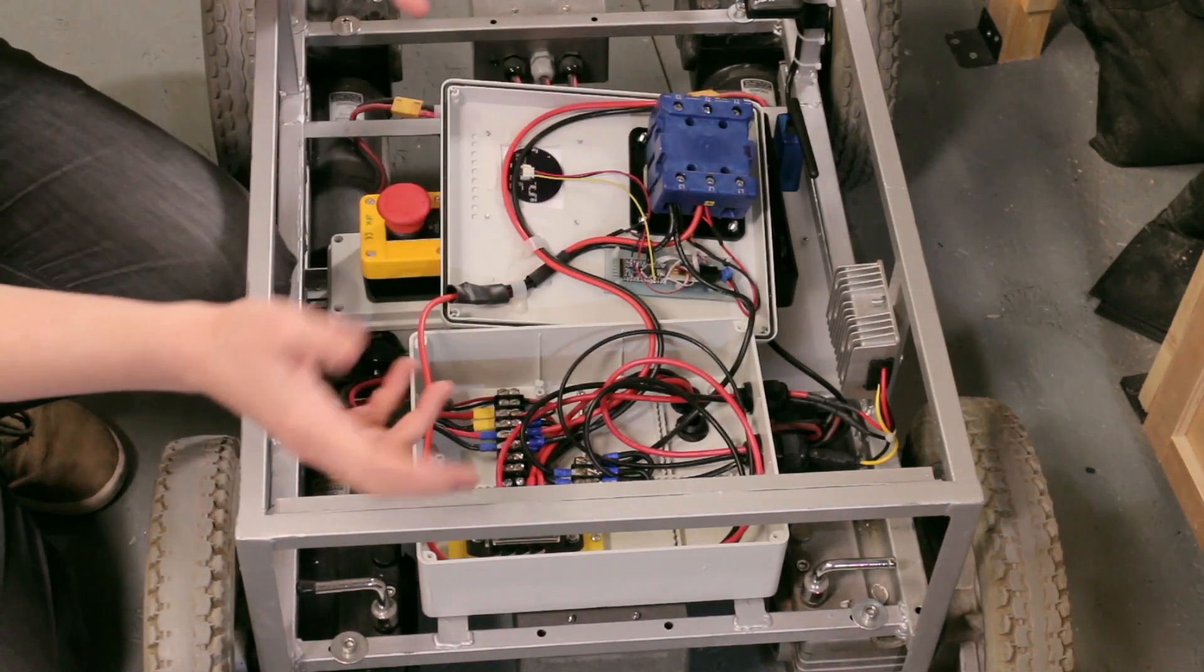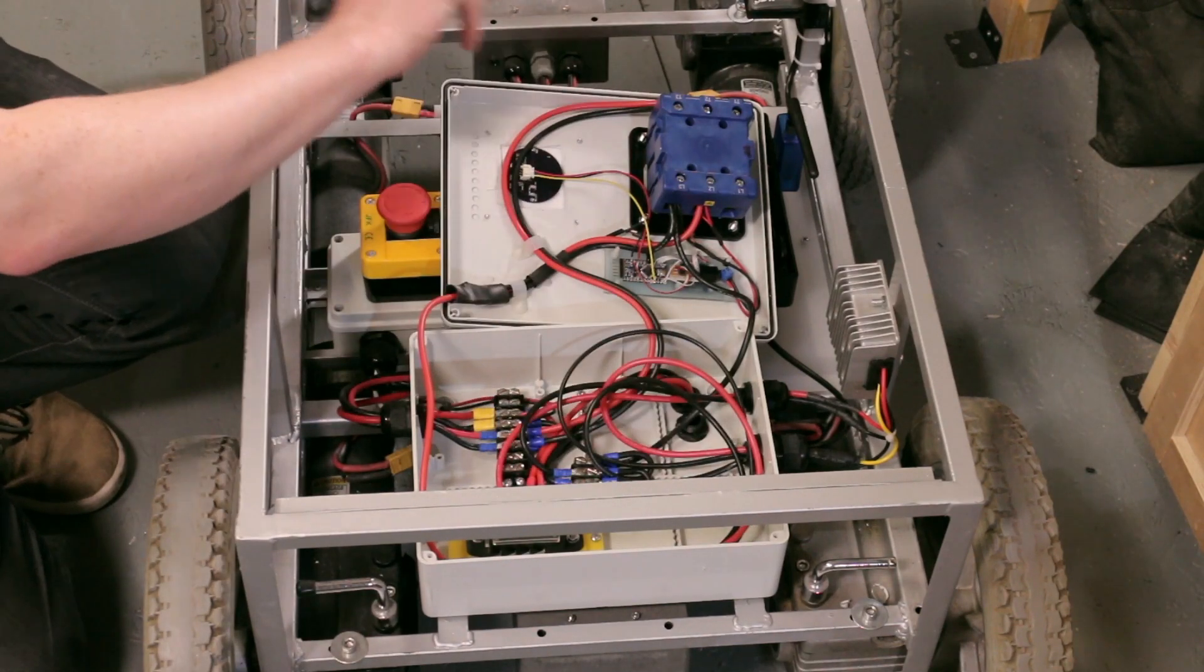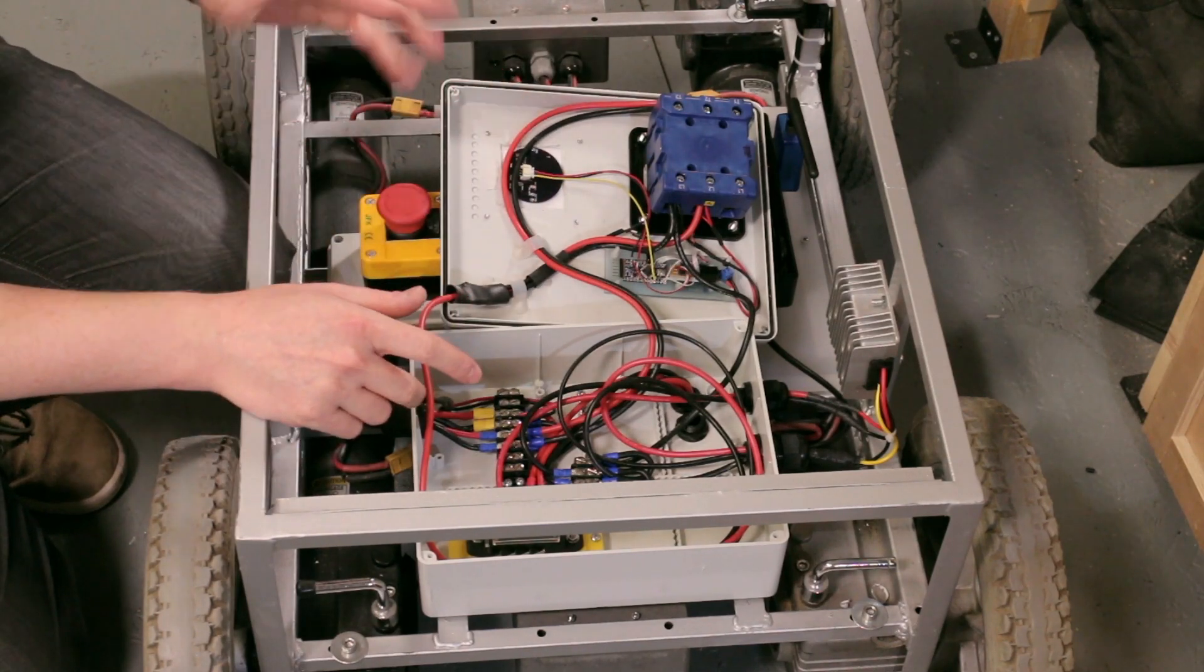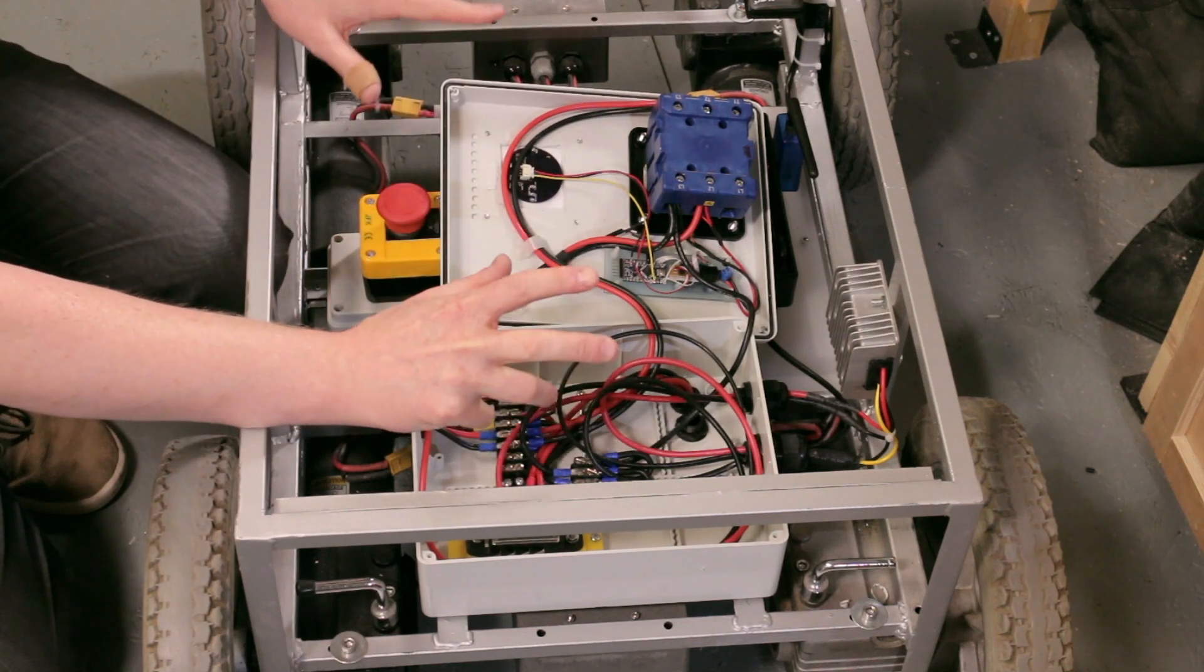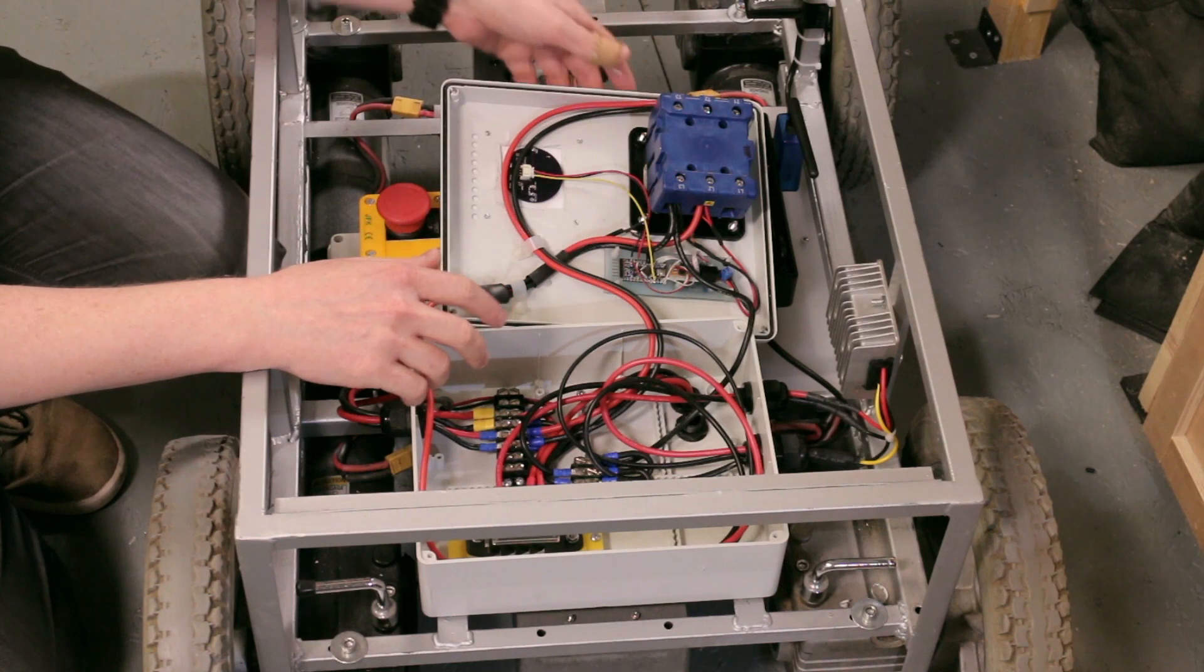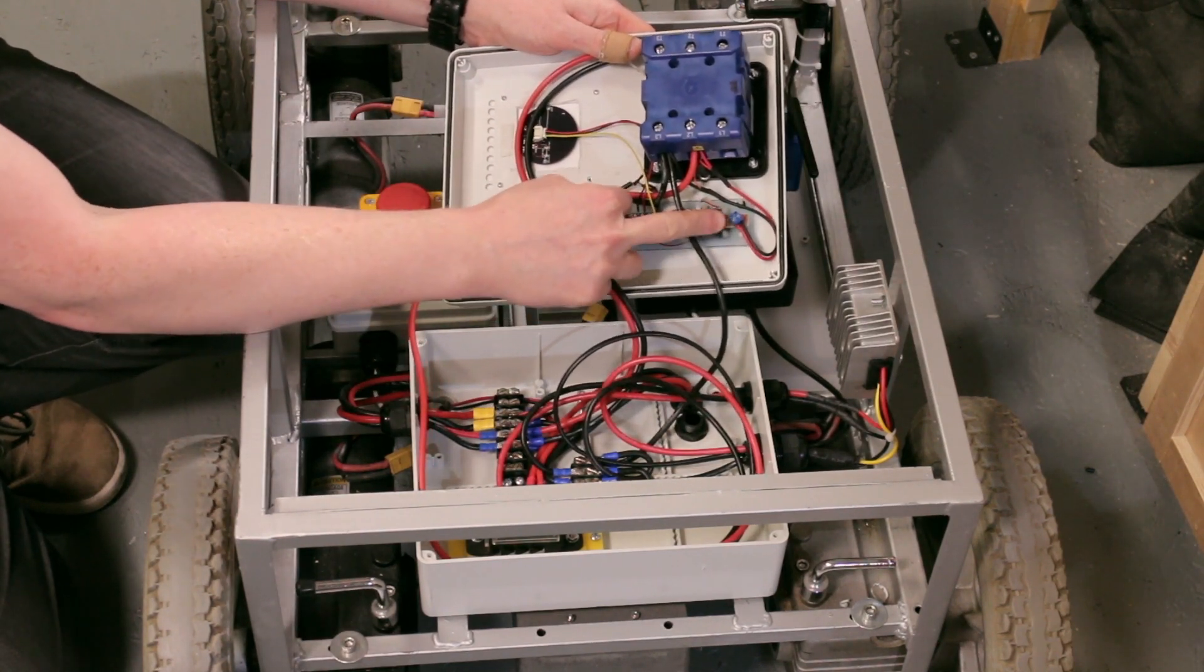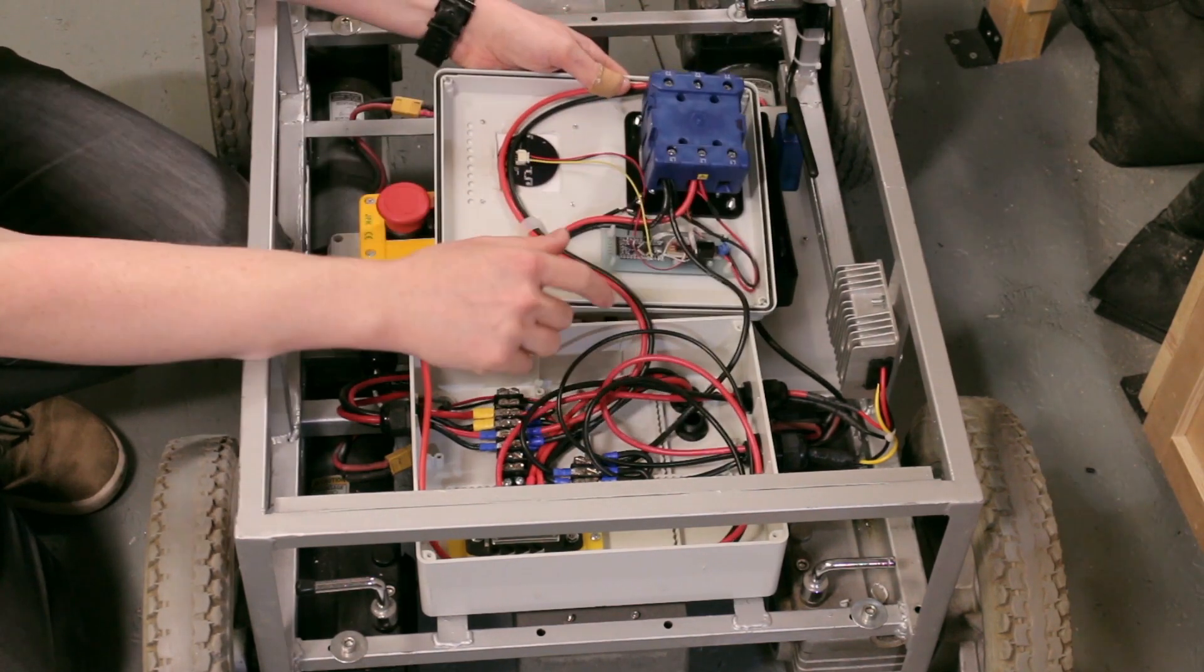I originally toyed with the idea of generating 5V centrally and feeding it out to whatever needed it, but I think what I'm going to do is settle on generating 12V centrally, feeding that out, and then if something needs 5V, it can generate that 5V locally. For example, the OLED screen on the control box has a 5V regulator built in to generate its own power.